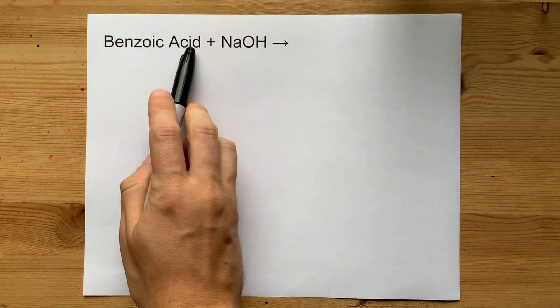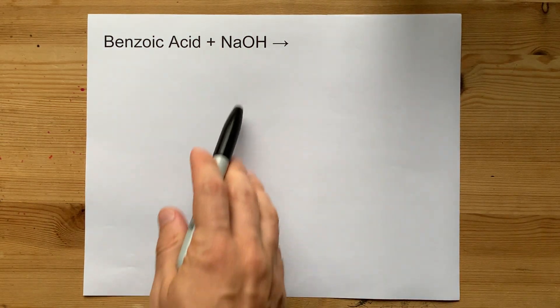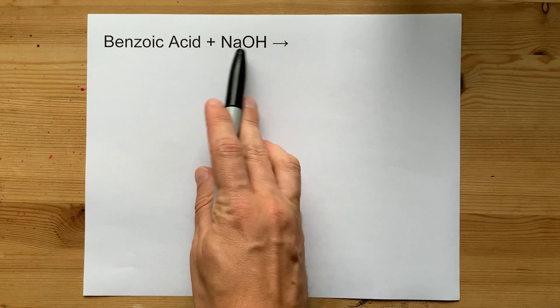What happens when you react a weak acid, like benzoic acid, with a strong base like NaOH?